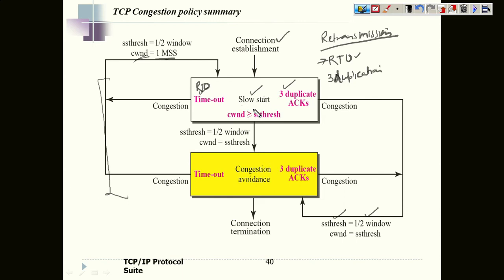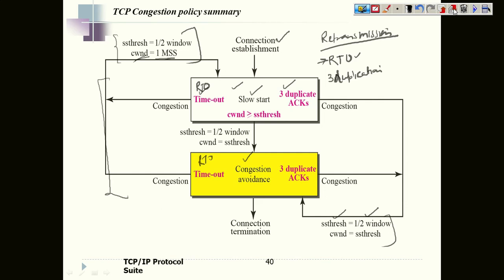Once your window reaches the threshold value, you move to the second phase — congestion avoidance — where the segment size increases one by one. If we reach the second phase and again there is a retransmission because of RTO, we follow the same rule: the threshold becomes half of the current window size and the congestion window becomes one segment. This is how congestion is handled in TCP. Now let's take one example to understand the scenario.